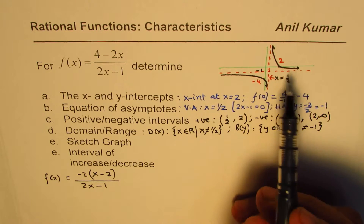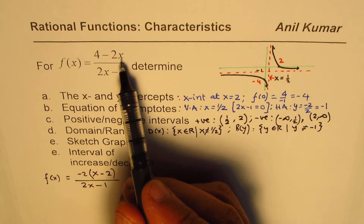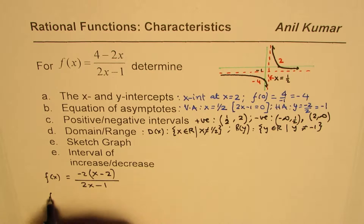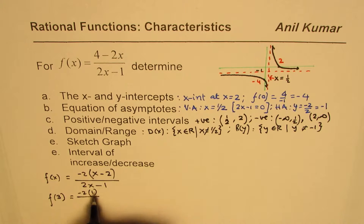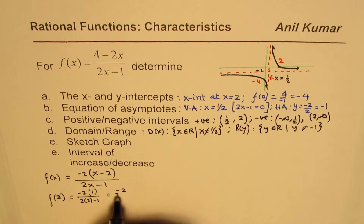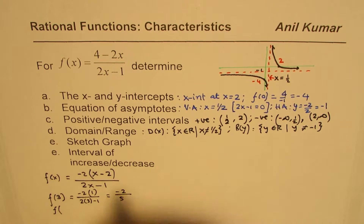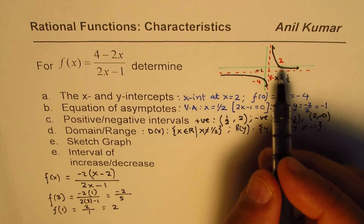To get a better picture for the sketch, find a few additional points. For example, at x = 3: the numerator gives minus 2 times (3 minus 2) = minus 2, denominator is 6 minus 1 = 5, so f(3) = minus 2/5. At x = 1: numerator is 4 minus 2 = 2, denominator is 2 minus 1 = 1, so f(1) = 2.